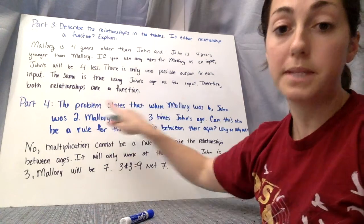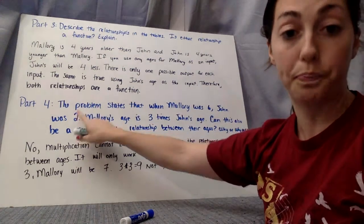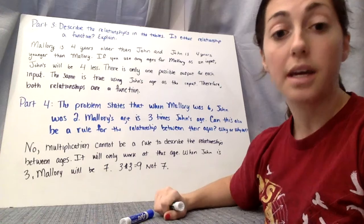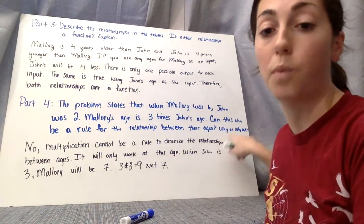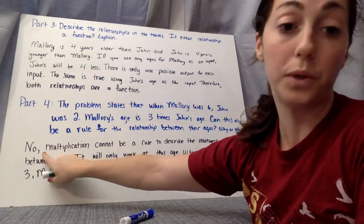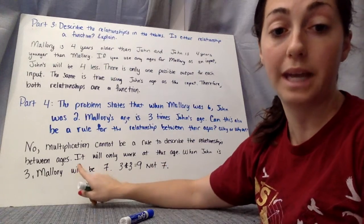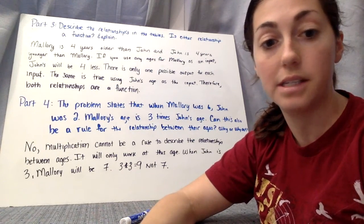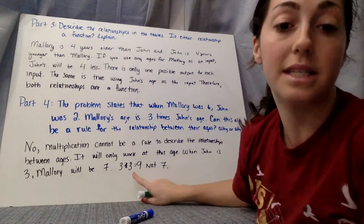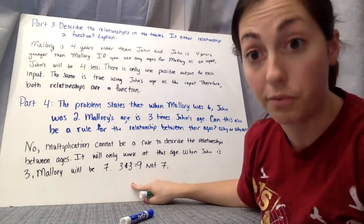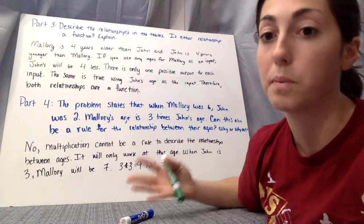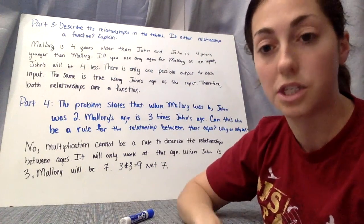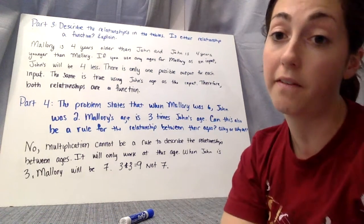Okay, part 4. The problem states when Mallory was 6, John was 2. Mallory's age is 3 times John's age, because 2 times 3 is 6. Can this be the rule? Can this also be a rule for the ages and why or why not? And it cannot be a rule. No. Multiplication cannot be a rule to describe the relationship between ages. It will only work at that age. Like next year when Mallory is 7 and John is 3, 3 times 3 is not 7, it's 9. So it only works in that case. You've got to be careful with that. So if it's ever a comparison of ages, it's never going to be multiplication because everybody ages at the same time, right? We all get older. The difference between people's ages is never going to change. All right, cool. So that's understanding functions.